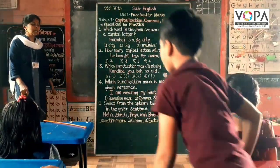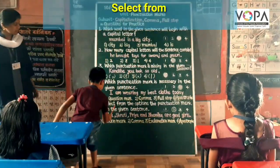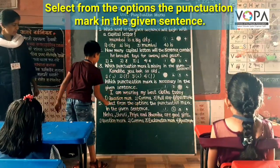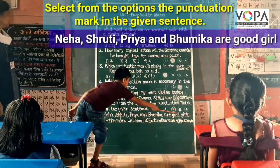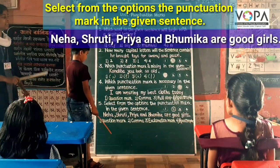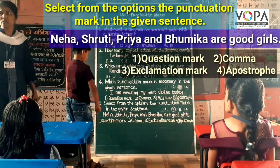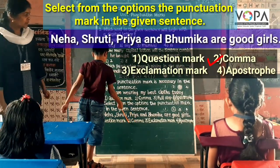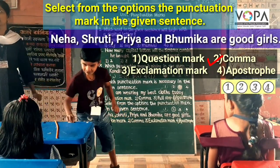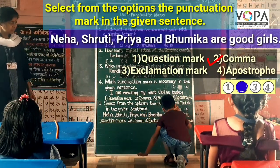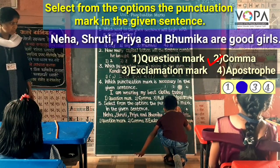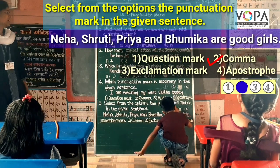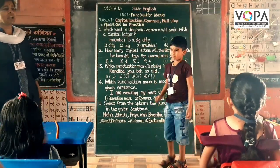Now Koyaj, come here. Read this fifth question: Select from the options the punctuation mark in the given sentence. Neva, Juru, Tivri and Pupikar are good girls. The answer is comma. What is the number of the answer? Second. Now color the second option. Very nice, Samartham. Clap for Samartham.